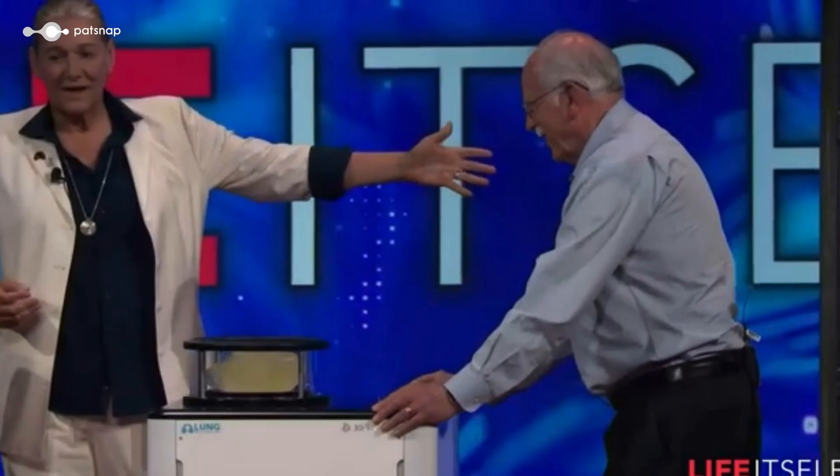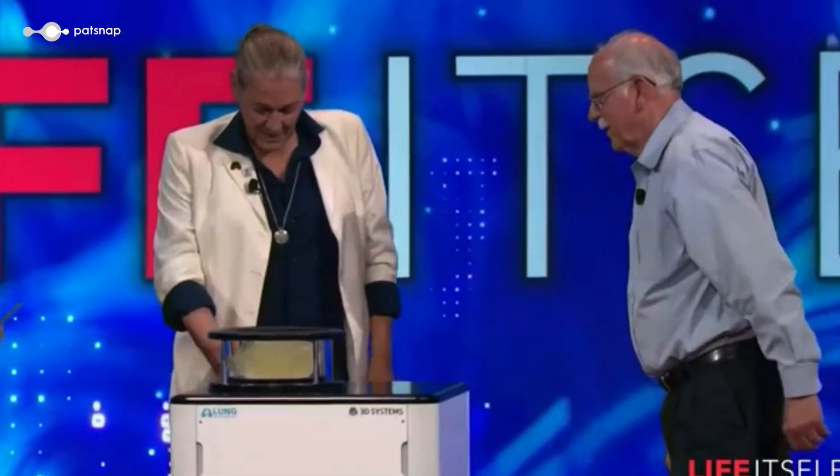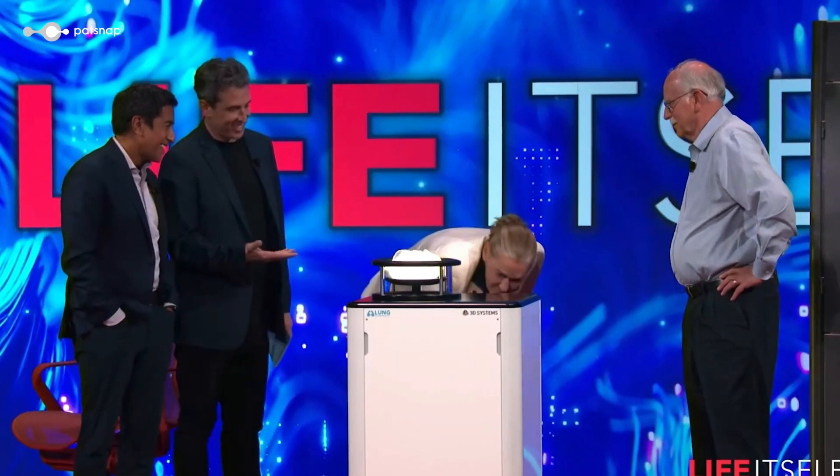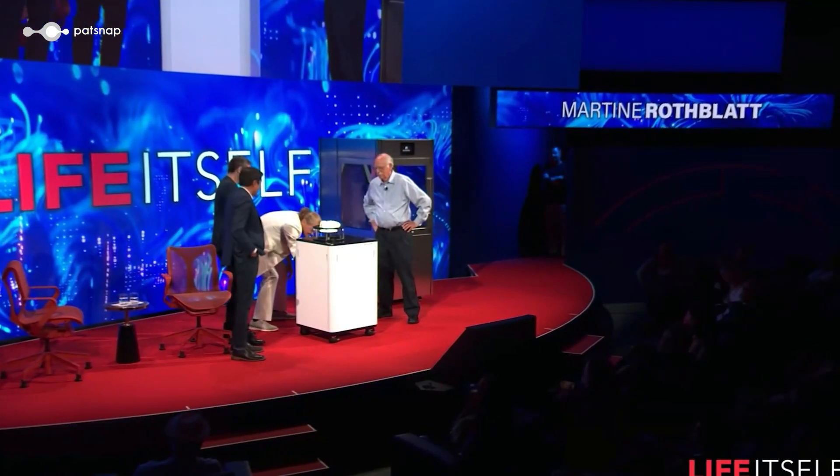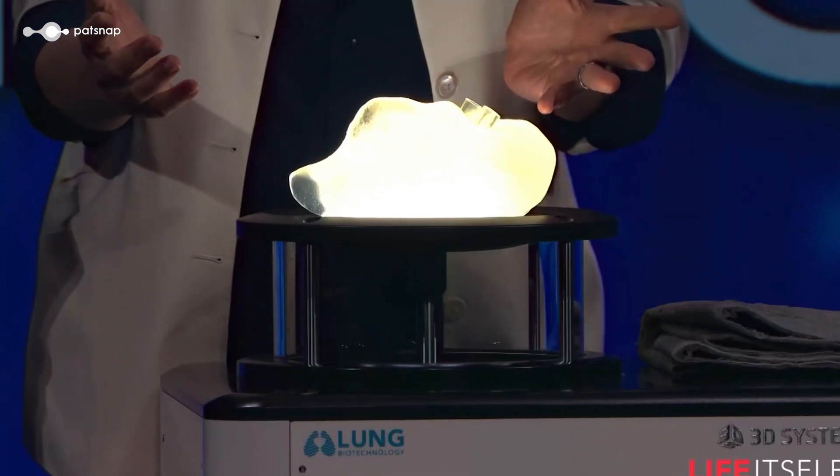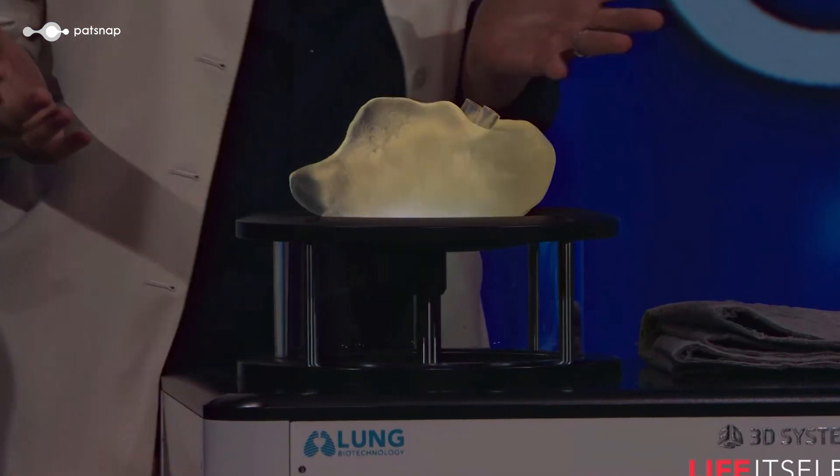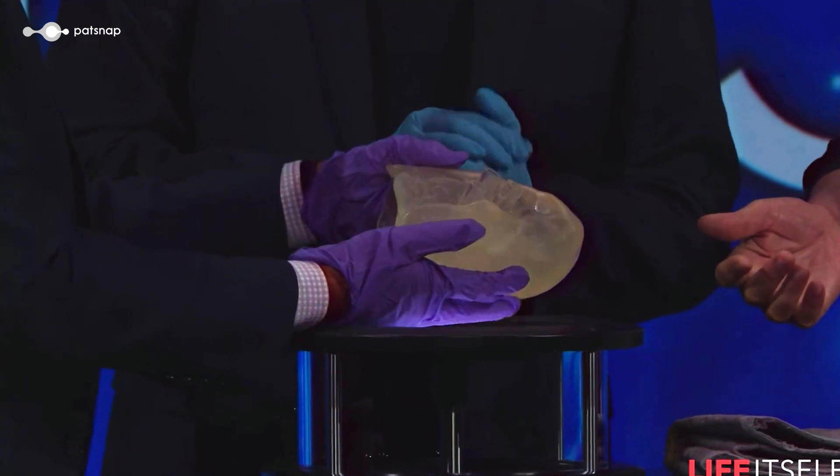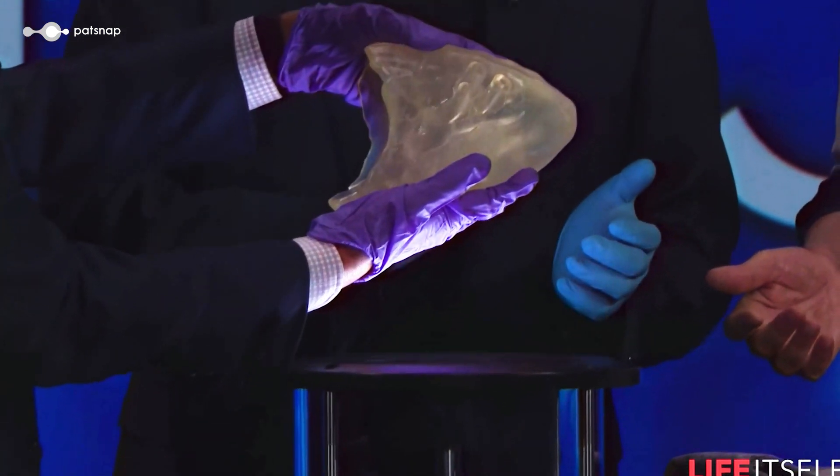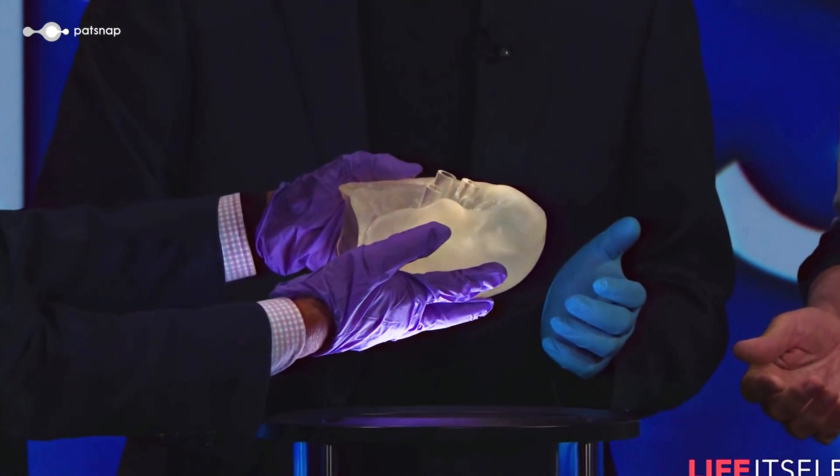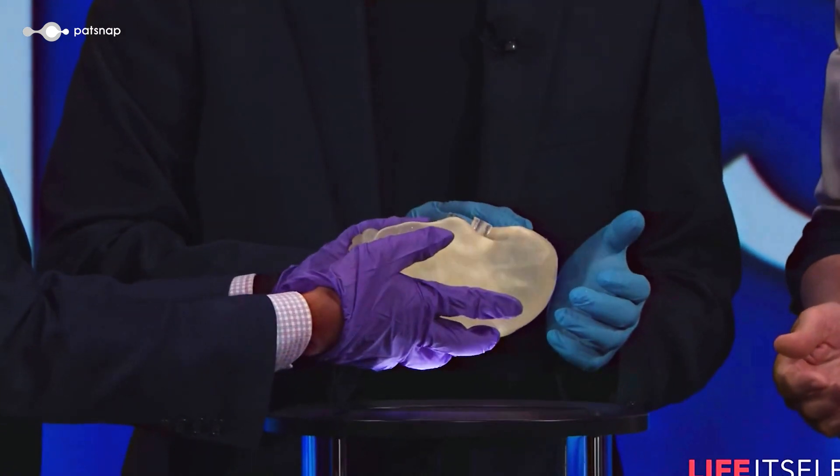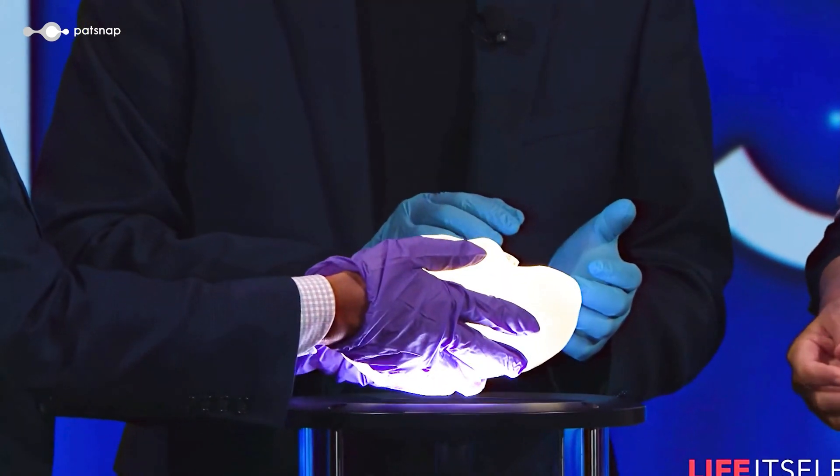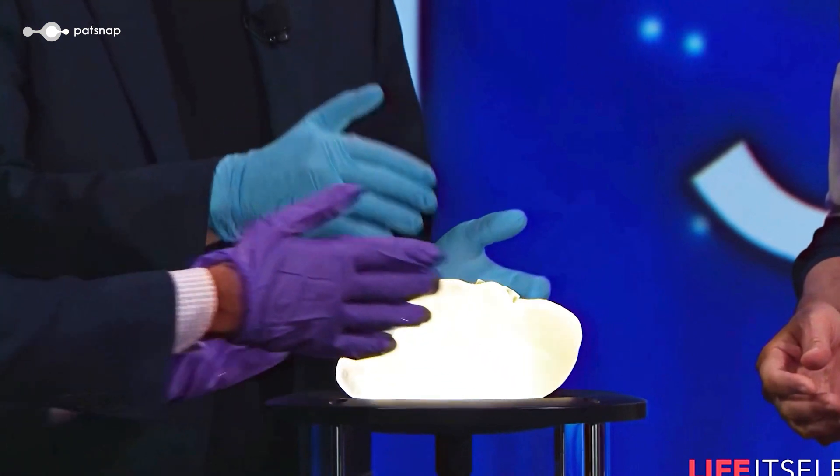This is the most complex three-dimensional object ever created using additive manufacturing. It is a functioning scaffold of a pair of lungs with 200 million alveoli, 4,000 kilometers of lung capillaries and consists of 44 trillion three-dimensional pixels or voxels. These lungs represent the absolute state-of-the-art in three-dimensional bioprinting and have already been successfully tested in animals. But how did we get here and what makes this technology possible?